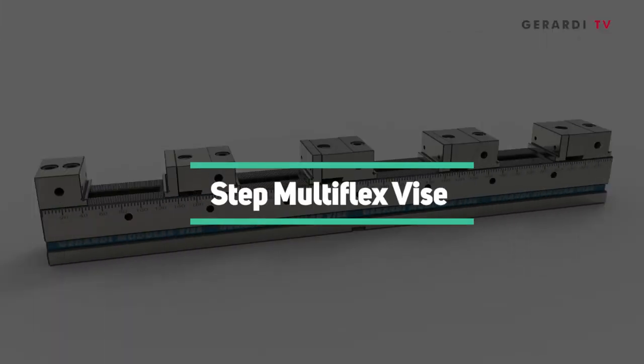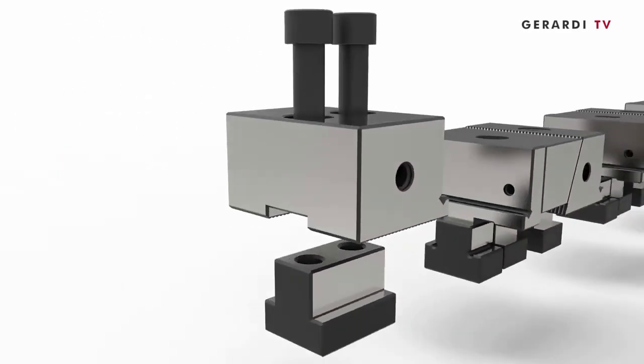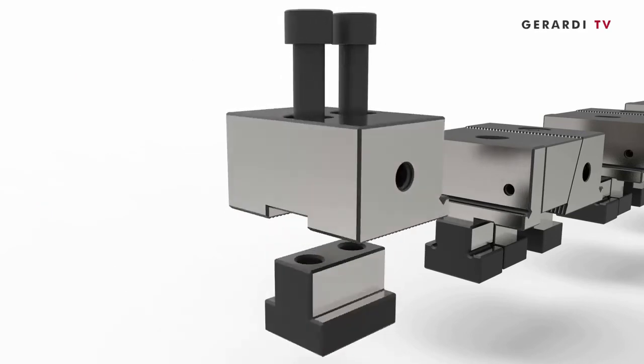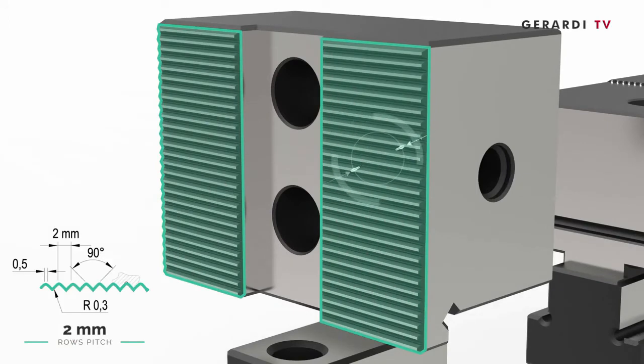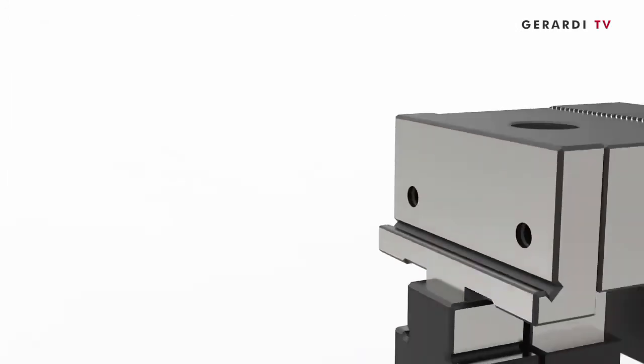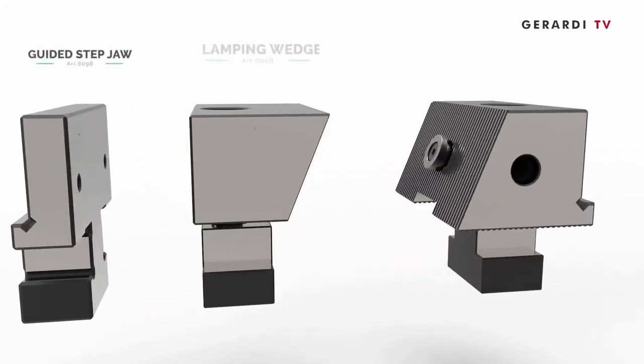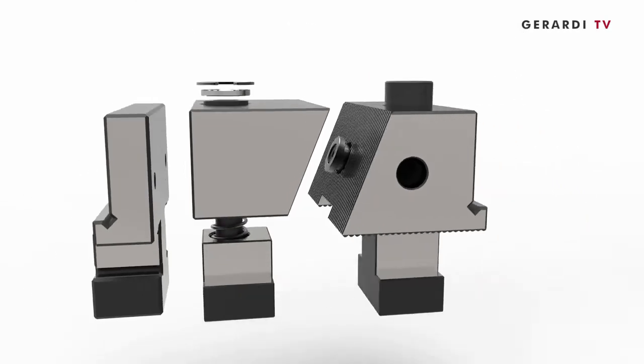Step multi-flex vise has the possibility to clamp workpieces on the jaw's integral steps. Of course, the clamping and the alignment accuracy is still the same, resulting from the ground-toothed rack with 2mm pitch.